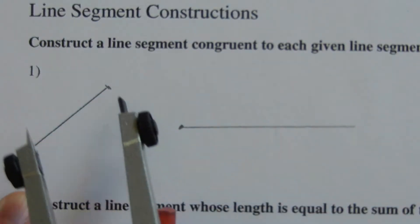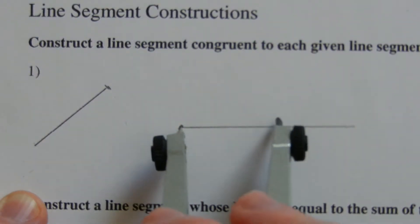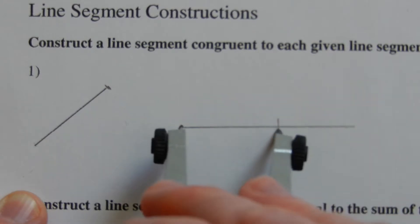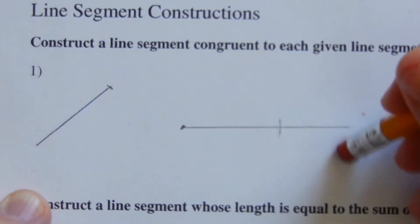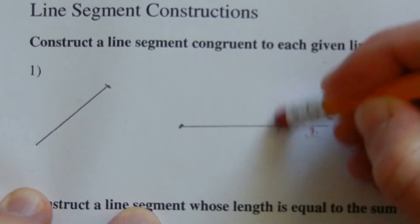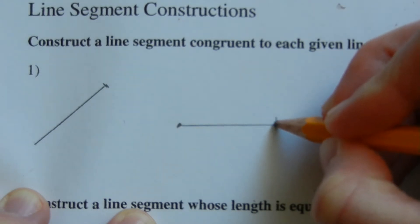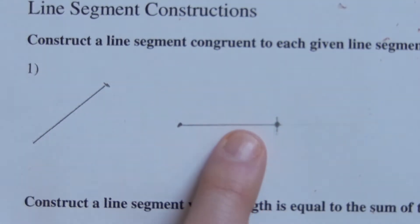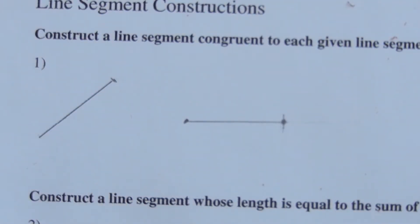Without changing my compass, I'm going to move it to the endpoint of my drawn line and mark with the pencil point — that will be the length of my new line. I'll erase the section extended past that mark, and my endpoint will be where that mark intersected my new line. This segment is congruent to the given segment.